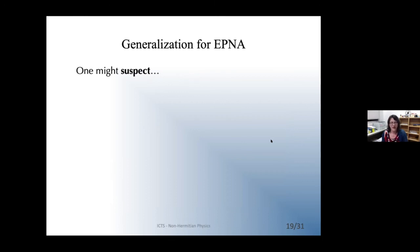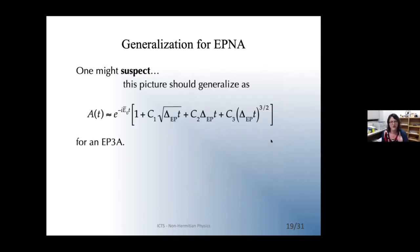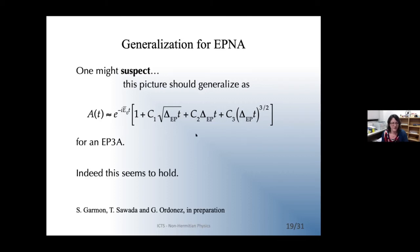One might expect this picture to generalize for higher-order exceptional points. For example, for an EP3a one would naturally expect a term of order t^{3/2} in the expansion. A simple numerical example we performed suggests this does indeed hold true.